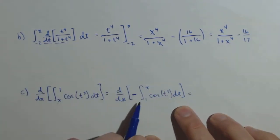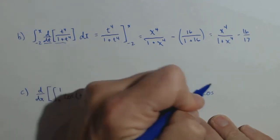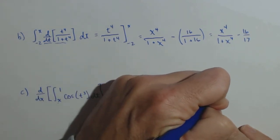and now, we can apply our second fundamental theorem of calculus, which says this is negative cosine of x cubed.